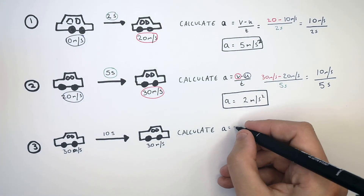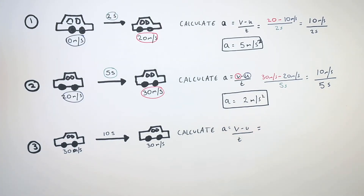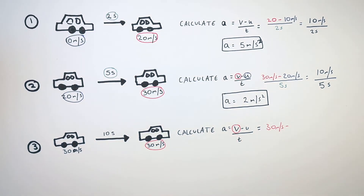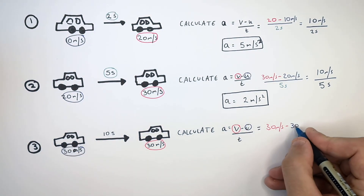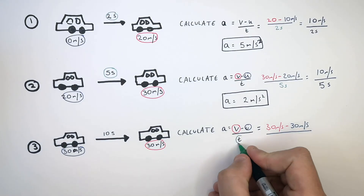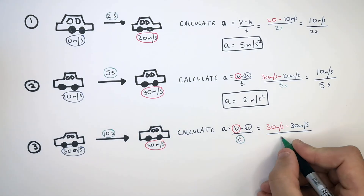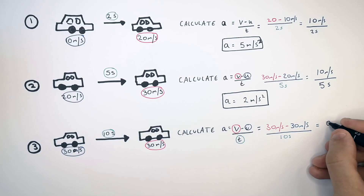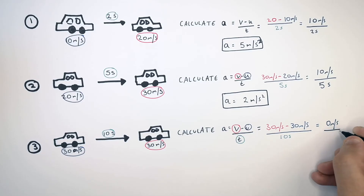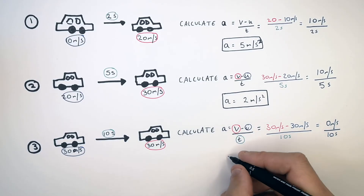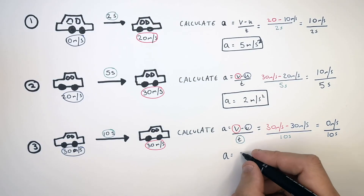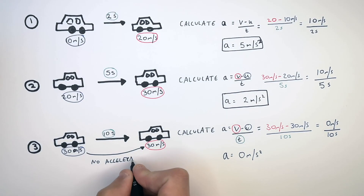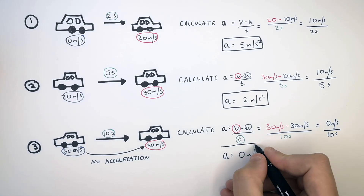Recall the equation a equals v minus u over t. V is 30 meters per second, u is 30 meters per second, and they are driving for 10 seconds — that is t, the time. The change in velocity is 0 meters per second, and you divide 0 meters per second by 10 seconds. That gives you an acceleration of 0 meters per second squared. They are not accelerating — they are traveling at a constant velocity.